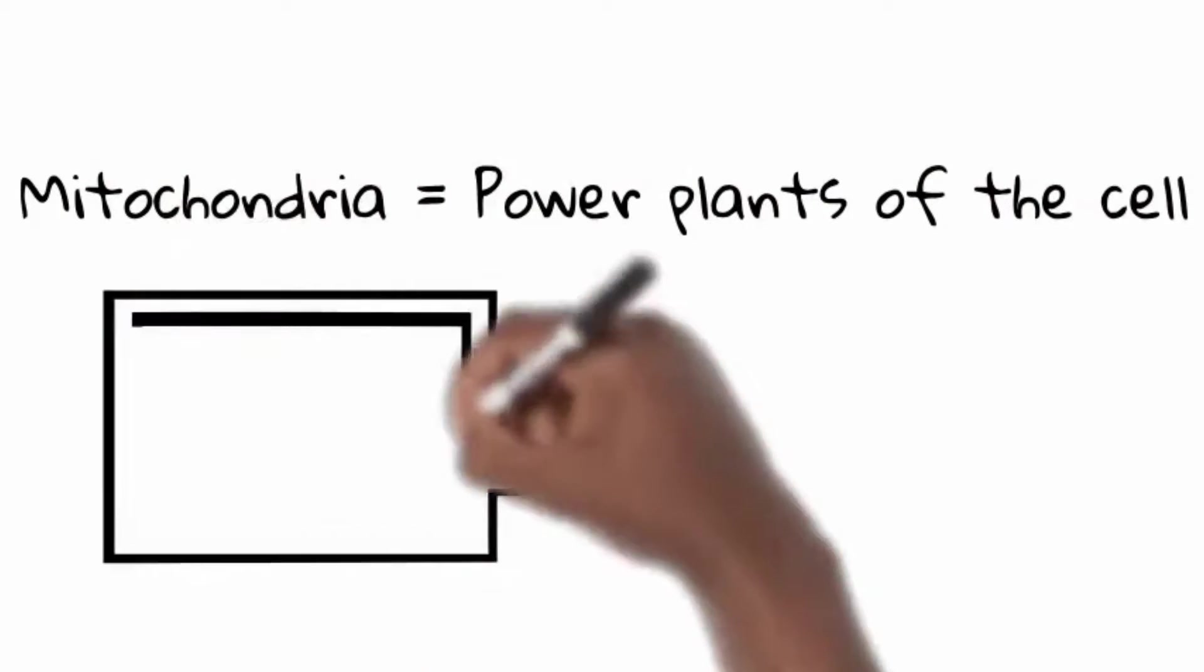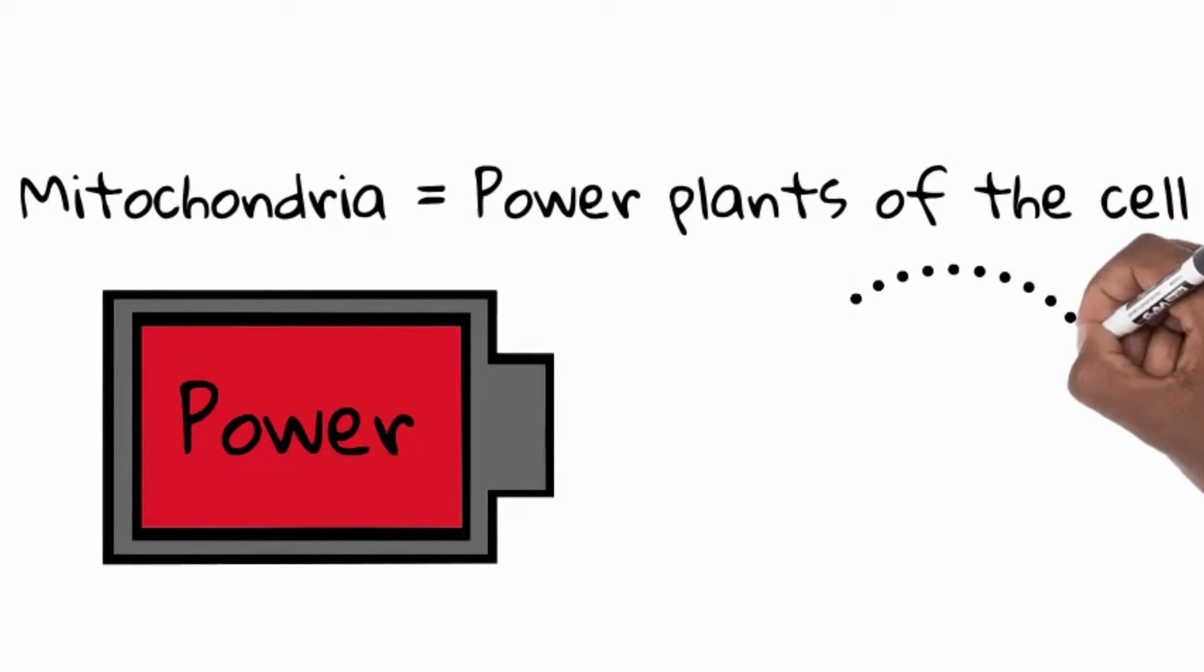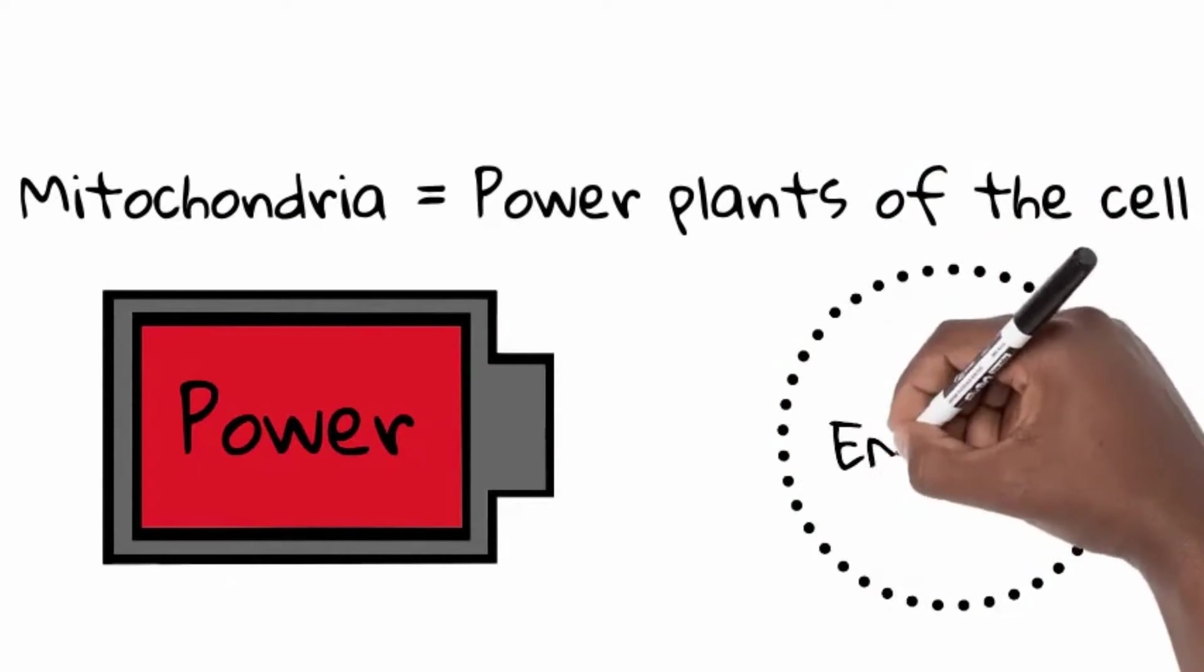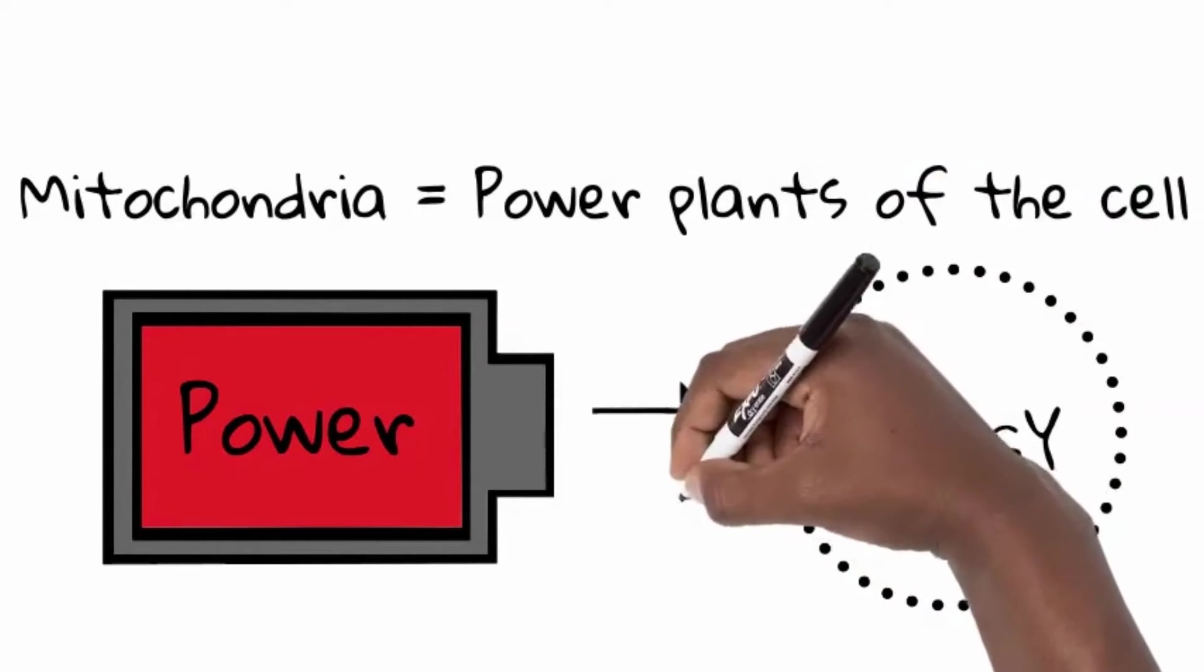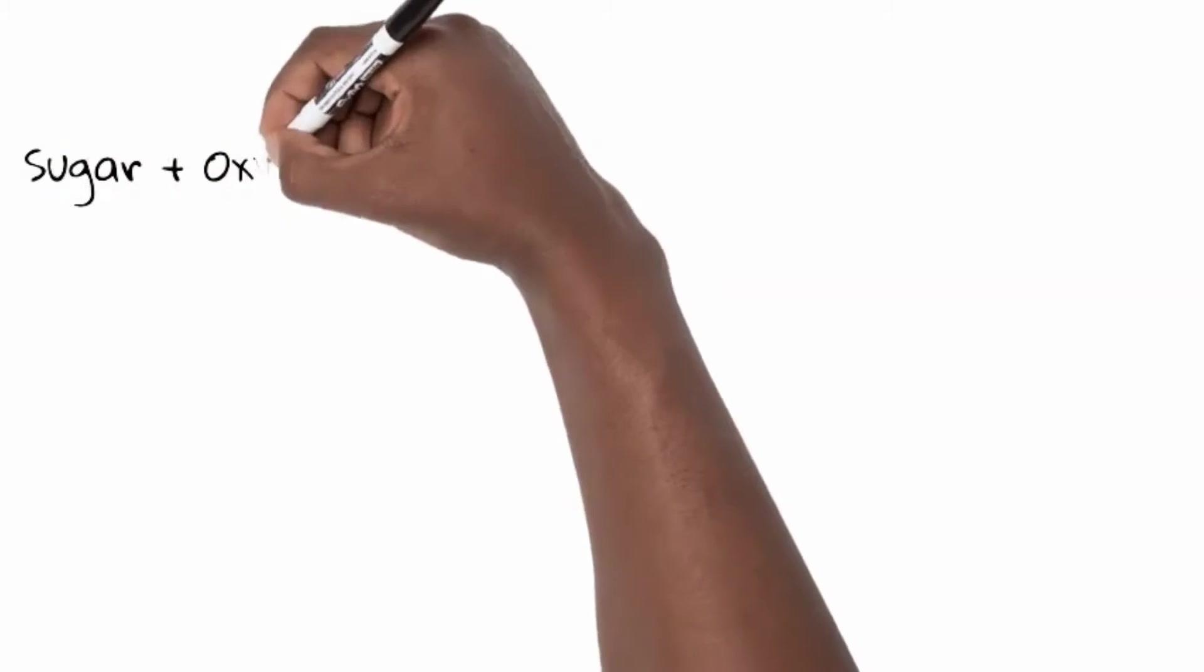What is mitochondria? You can think of mitochondria as the power plant of the cell. These power plants create the energy needed for the cells to survive and function. But how do these power plants called mitochondria work?